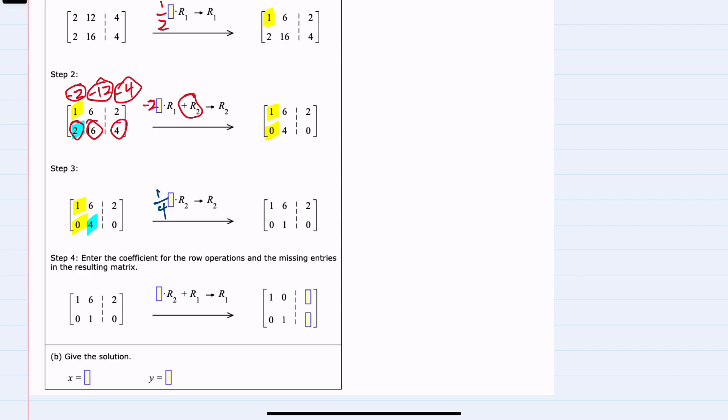Across the entire row, one fourth times zero is still zero, one fourth times four is one, one fourth times zero is zero. Just doing this sort of scalar multiplication, we now have the one in the upper left-hand corner, the one in the lower right-hand corner, and the zero.